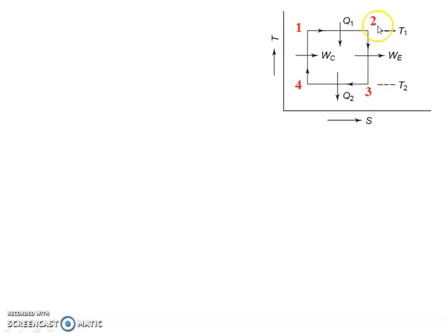On the temperature-entropy diagram: process 1 to 2 is isothermal heat addition, 2 to 3 is isentropic expansion, 3 to 4 is isothermal heat rejection, and 4 to 1 is isentropic compression.